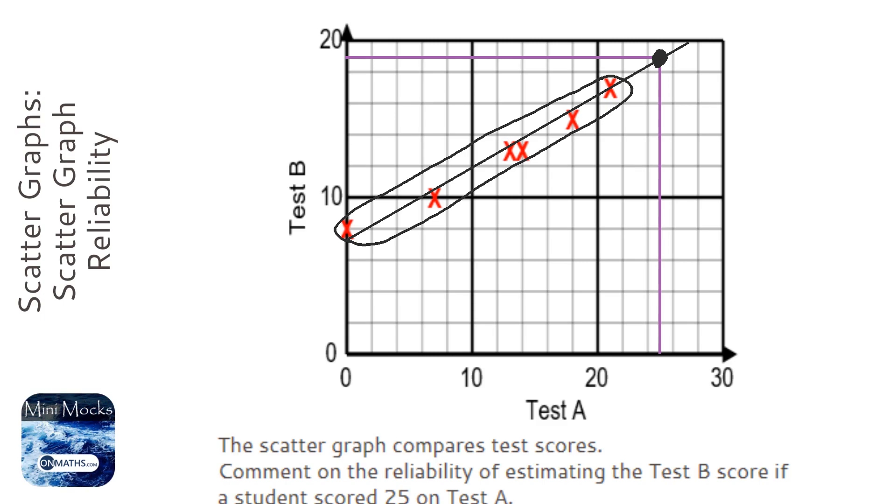Clearly, the pattern, the line of best fit, the relationship, the correlation, actually stops. And it could be that the maximum mark you could get on test B was 18. So you couldn't possibly get 19 on test B. So you've got to be very careful of where you're estimating from.